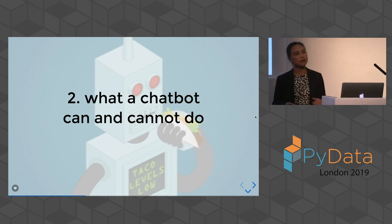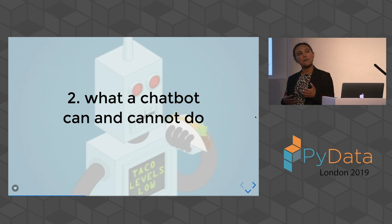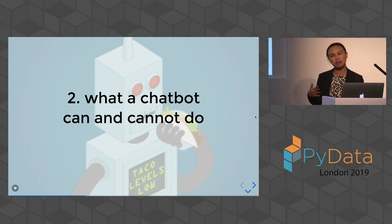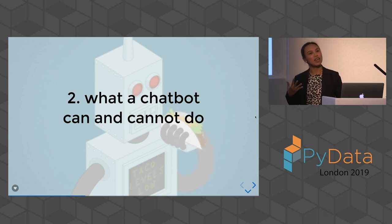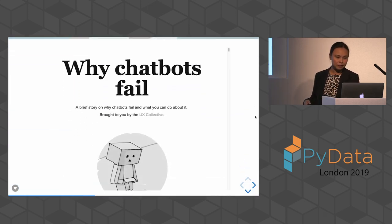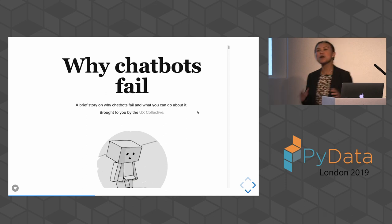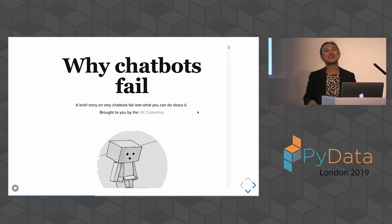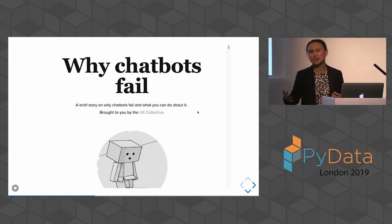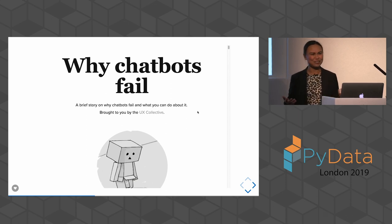The second thing I want to talk about is what a chatbot can and cannot do. At the beginning I mentioned the Turing test, but a lot of bots we come across aren't passing it — because maybe that's not what we want them to do. I came across a post about why chatbots fail. Who has come across a really horrible chatbot where you'd rather just click or fill in a form? Why, with all our machine learning and deep learning, is a chatbot still so horrible?